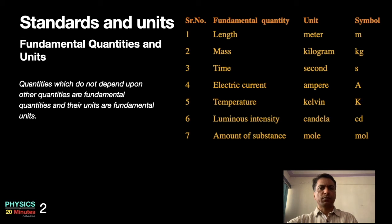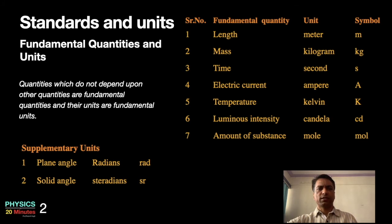These are the seven fundamental quantities. Apart from these seven fundamental quantities, there are two supplemental units. Plane angle - angles formed in a plane, unit is radian. And solid angle - angles formed in three dimensions, they are called steradians, sr.